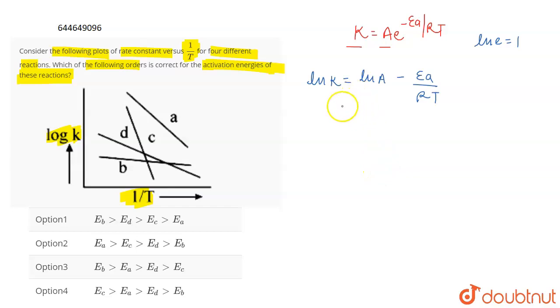If we convert it into log with base 10, we will multiply ln and it will become 2.303 log K. If you have to convert ln into log, you have to multiply 2.303 to it. So this equation will become log K is equal to log A minus Ea divided by 2.303 RT.